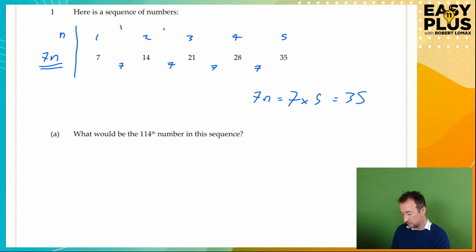Whatever n is, the number in the sequence is 7 times n. So here, for example, n is 5. 7n equals 7 times 5 equals 35. OK, so with that sorted, we're now in a position to answer this question. We know that we're looking for 7n, and we know that n equals 114. Where we've got the 114th number, n is 114. We want 7n. 7n equals 7 times 114.